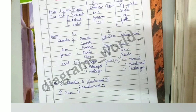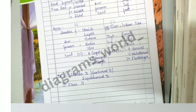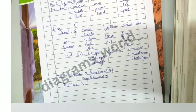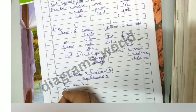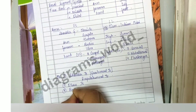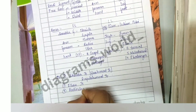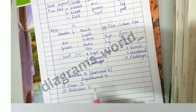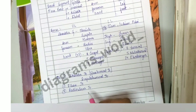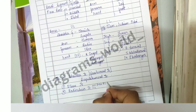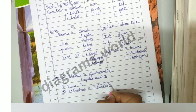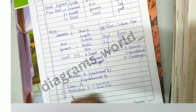Then we have the elbow joint, made up of the distal part of the humerus and the proximal part of the forearm bones. Then we have the radio-ulnar joint — the two bones of the forearm form two radio-ulnar joints: the proximal radio-ulnar joint and the distal radio-ulnar joint. Then we have the wrist joint.